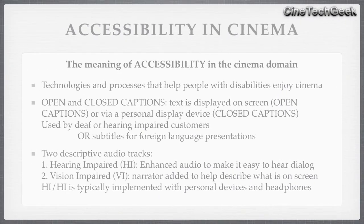The meaning of accessibility in the cinema domain is basically technologies and processes that help people with disabilities enjoy cinema. This involves open and closed captions. Text is displayed on screen with open captions, so everyone can see the text on the screen. Closed captions are personalised — only the person who is acquiring the captions is seeing them, while other people just see the film normally on screen. People who would require this are hearing impaired customers.